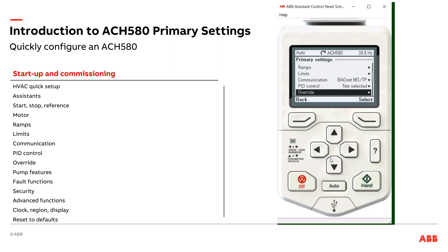Override — also called fireman's override or smoke control — gives you the ability to ignore certain safeties when in override mode. For example, if there's a fire, by default the drive will shut down if it detects smoke in the return air on that safety. However, once the fire marshal is on site, they might say they need to pressurize the floor. So when they put the drive in override mode, it can be programmed to ignore certain safeties. It'll also ignore certain internal faults within the drive so you don't get nuisance trips.